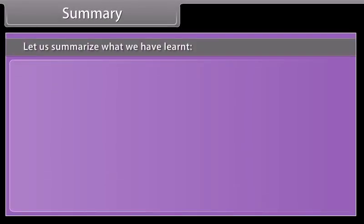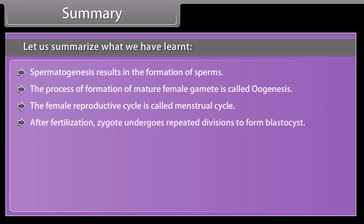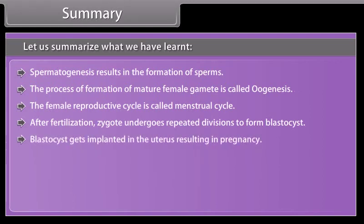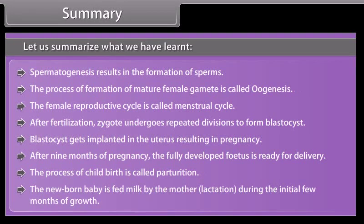Summary: spermatogenesis results in the formation of sperms. The process of formation of a mature female gamete is called oogenesis. The female reproductive cycle is called the menstrual cycle. After fertilization, the zygote undergoes repeated divisions to form a blastocyst. The blastocyst gets implanted in the uterus, resulting in pregnancy. After nine months of pregnancy, the fully developed fetus is ready for delivery. The process of childbirth is called parturition. The newborn baby is fed milk by the mother through lactation during the initial few months of growth.